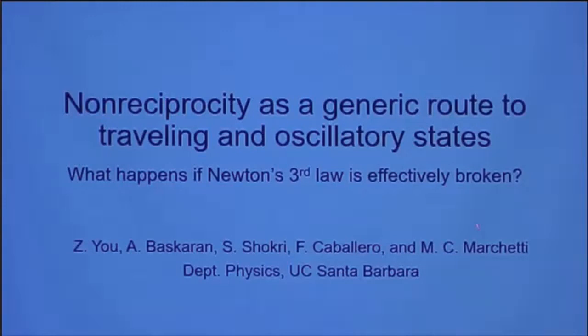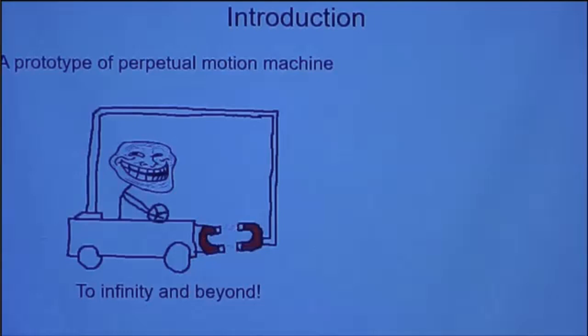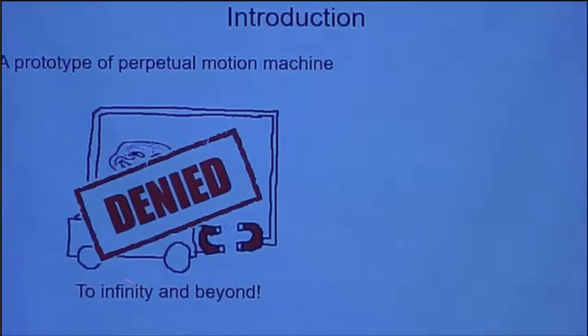First, allow me to introduce a prototype of a perpetual motion machine. The idea is that a first magnet can attract a second one and this can propel the whole car, taking it to infinity and beyond. But we all know this is not possible, precisely because of Newton's third law, which states that the interaction between any two objects has the same magnitude but opposite directions. So all internal forces cancel out and the car can never move unless there is an application of external forces.